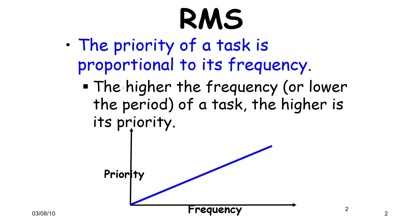In EDF, the priority changes over time. But in rate monotonic scheduling, the priority of a task is proportional to its frequency. The higher the frequency of the task, or the lower the period, the higher its priority. Priority can be represented on the y-axis and frequency, which is 1 over the time period, on the x-axis, showing a linear relationship between priority and frequency.